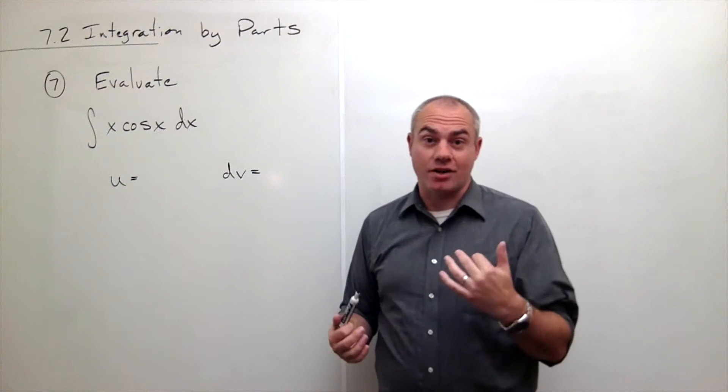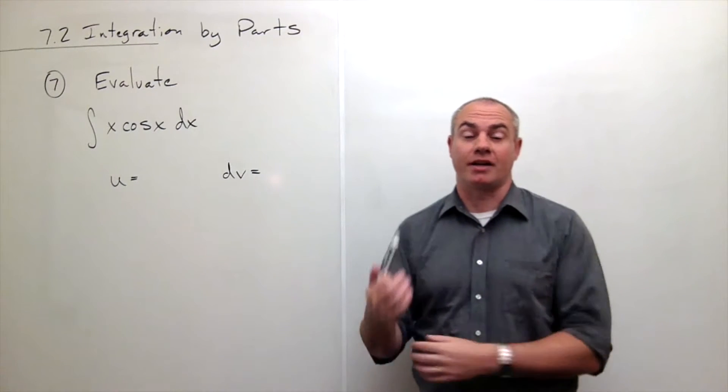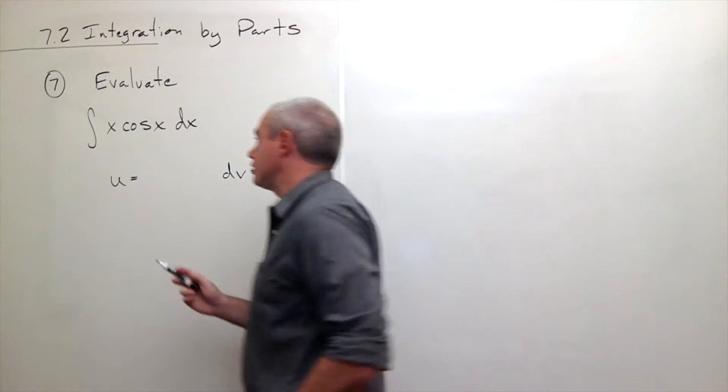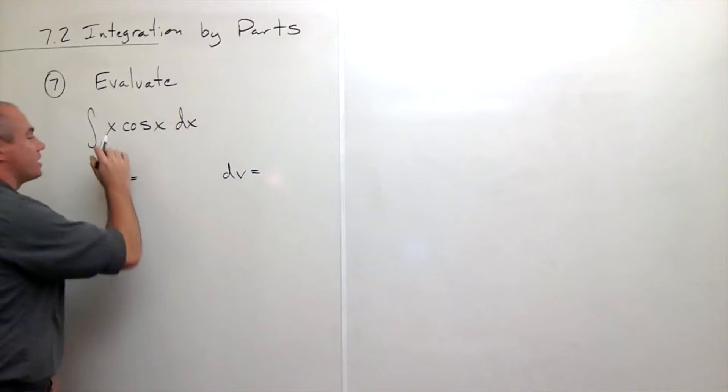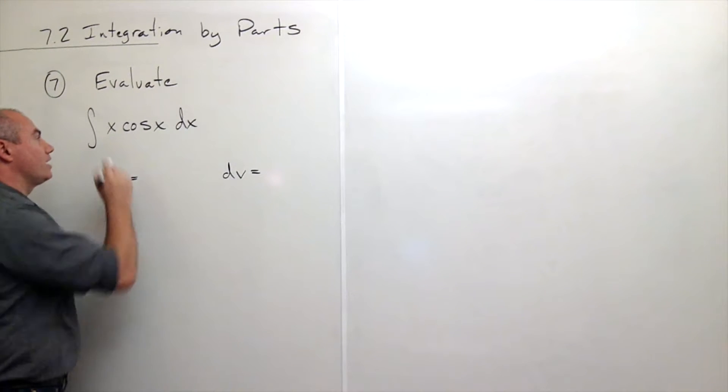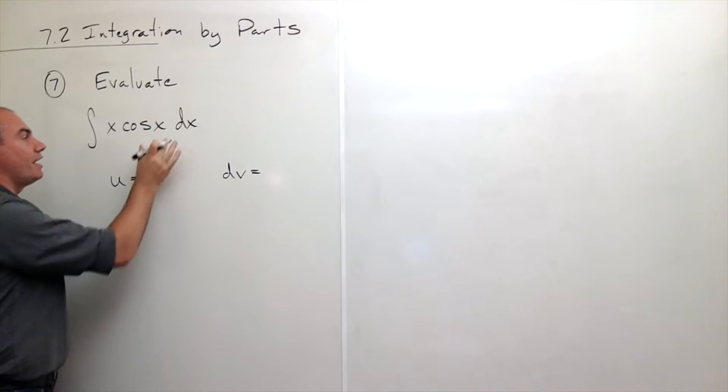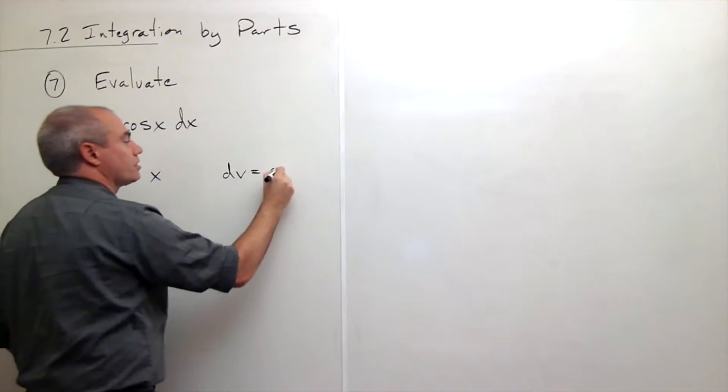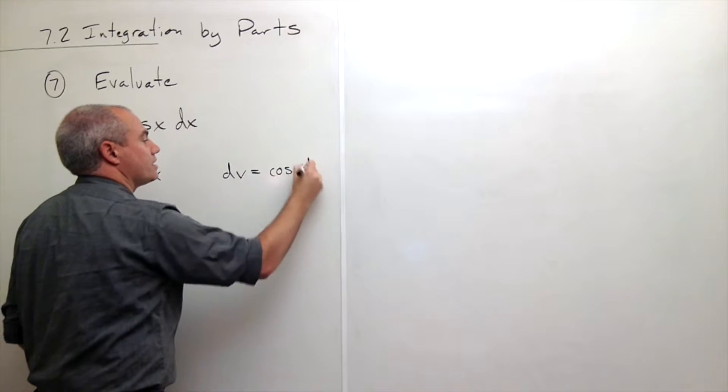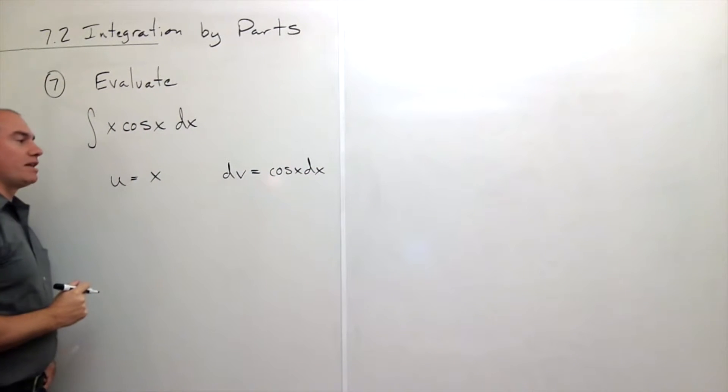So if possible, make things less complicated, not more complicated. So in this case, what I want to do when I'm breaking this up into a u and a dv is I want x to be the thing that I take the derivative of, and then everything else, which is cosine x dx, becomes my dv.